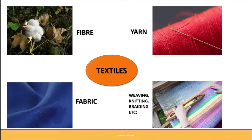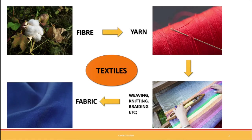We get yarn from fiber. Fibers are thin filaments that occur either naturally or can be man-made. Natural fibers include cotton, silk, and jute - cotton from plants, silk from silkworms. Man-made fibers include nylon and polyester, which are synthetic. These fibers are twisted together through a process called spinning to get yarn, which is then subjected to weaving, knitting, or braiding to produce fabric.